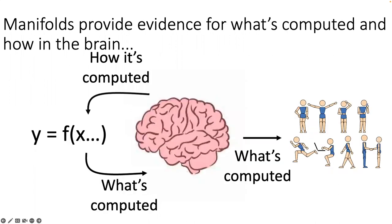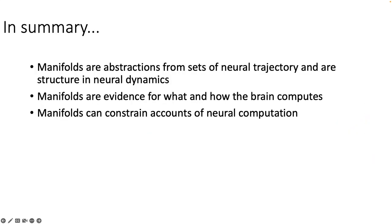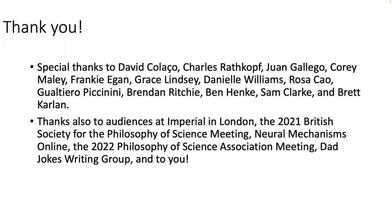In sum, different mappings provide evidence for different things. Mapping the implemented computation onto the behavior provides evidence for what is being computed. Mapping the physical system onto the computation provides evidence for how the transformation from input to output works, and further suggests the neurocomputational manifold hypothesis. In summary: manifolds are abstractions from sets of neural trajectories and structure in neural dynamics; manifolds are evidence for what and how the brain computes; and suggestively, manifolds may constrain accounts of neural computation by requiring a certain sort of homomorphism for a physical system to perform a neural computation. Thank you.